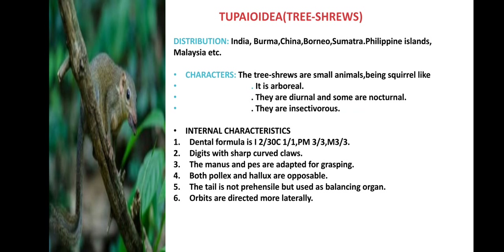They are diurnal, meaning they can see in the day, and some are nocturnal, meaning they can see in both day and night. They eat insects, so they are insectivorous. Their dental formula is: Incisors, Canine, Premolar, Molar = 2.1.3.3 / 3.1.3.3. They have sharp curved claws, not nails. The hands and feet are adapted for grasping. Both pollux and hallux are opposable. The tail is not prehensile but is used as a balancing organ. The orbits are adapted more laterally — the eyes are positioned laterally, not between the face as in humans.